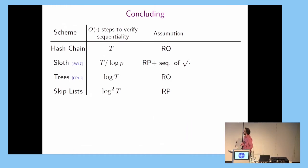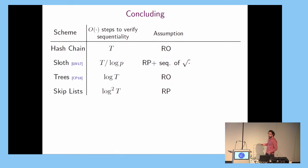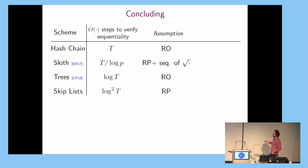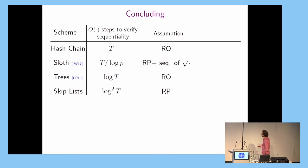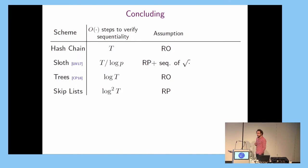In summary: to verify sequentiality, the hash chain requires redoing the computation; the sloth function gained a log p factor in practice; the Cohen-Pietrzak trees achieve log t; and our new construction achieves log t as well — though to be fair, the input to queries here is larger, potentially of size log t, so in the worst case the comparison becomes log t times log-squared factors. Assumptions used are random oracles, random permutations, and sequentiality of repeated squaring.